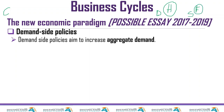Any demand side policy mainly targets households. This policy asks: what can we do to stimulate aggregate demand? What we mean by stimulation of aggregate demand is simply shifting the demand curve to the right.